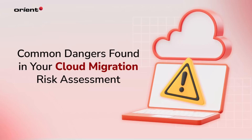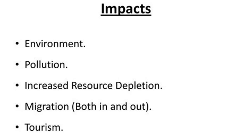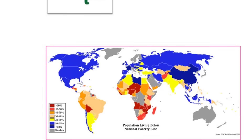The federal government classifies four categories of waste under the Resource Conservation and Recovery Act. Each class begins with a prefix — F, P, K, or U. The groups are distinct and represent a specific waste type.